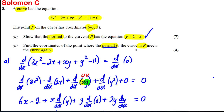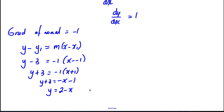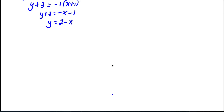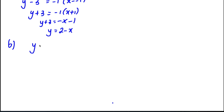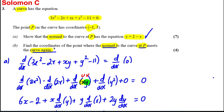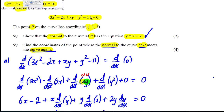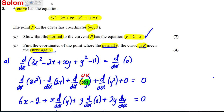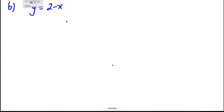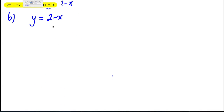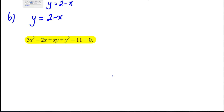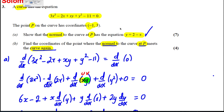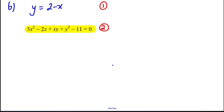Next, for part b, we want to find the coordinates where the normal at P meets the curve again. The normal is y = 2 - x, and the equation of the curve is as given. For the two to meet, the two equations must hold simultaneously. We obviously already know they meet at (-1, 3), but we need to find where else they meet, so we substitute equation 1 into equation 2.